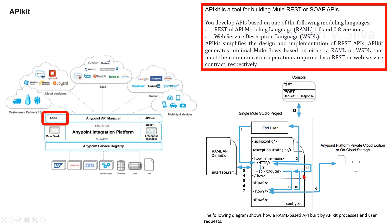In step eleven, the router pushes the response to the HTTP or Jetty endpoint. In step twelve, the HTTP or Jetty endpoint sends the response to the end user. In step thirteen, from the console you can simulate API calls by submitting requests through the web user interface.